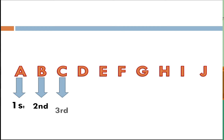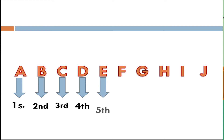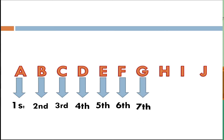What will be the rank of letter C? Letter C will be our third rank. What will be our fourth rank? Our fourth rank will be D, and our fifth rank will be letter E. What will be the rank of letter F? We rank F as sixth. How about G? G will be our seventh rank.